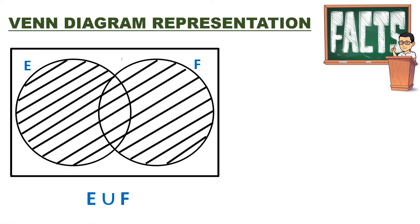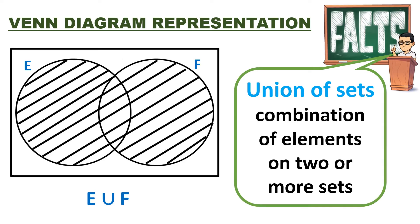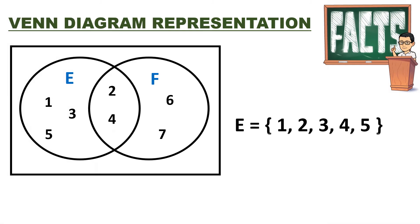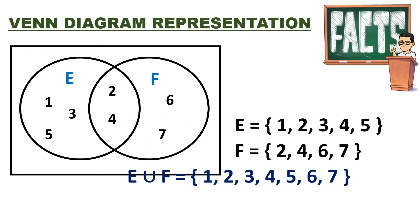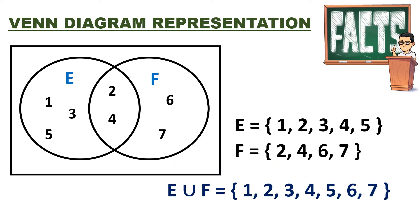For our third Venn Diagram representation is what we call the union of sets — the combination of elements of two or more sets. In the given figure, all the shaded area in both set E and set F is the union of the two sets. To find the union of set E and set F, we combine all the elements. So, E union F equals 1, 2, 3, 4, 5, 6, 7. To get the union of sets, all you have to do is combine the elements.